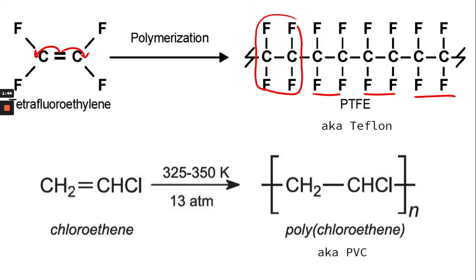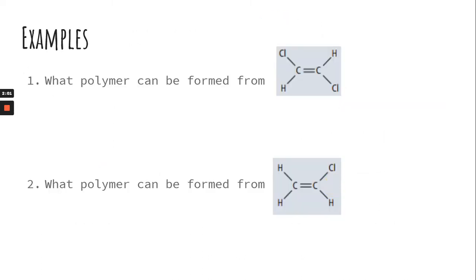Here we have chloroethene. That double bond is going to break and allow the carbon to join on either side. And so then you make PVC, that plastic for pipes, PVC pipes. All right, so let's look at an example or two.